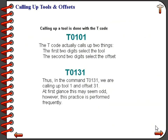Programming the machine to call up a tool is really quite simple. We are going to use the T code to call up a tool; however the T code calls up two things. In this example we have T0101 — the first two digits 01 call up the tool, and the second two digits 01 call up an offset. It is important to understand that we can call up tool 1 with a different offset; for example T0131 calls up tool 1 with offset 31.